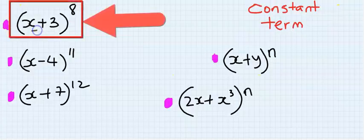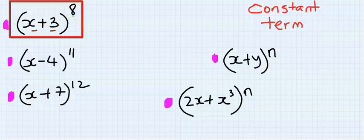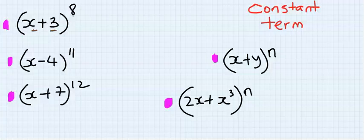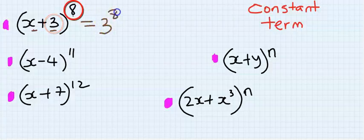If you're given a variable and a constant with a power at the top to find the constant term, you are going to expand this bracket and find the constant term. However, the simple secret is the last term, which is 3 to the power of 8, is the constant term.